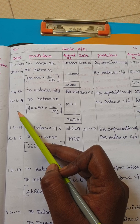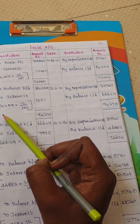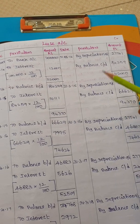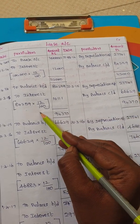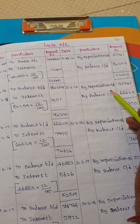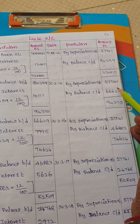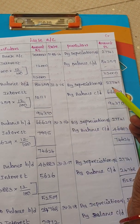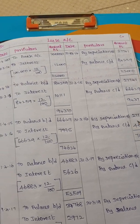On 1-4-2014, to balance brought down: 84,259. To interest account — for that year the interest we have to pay on 84,259 comes to 10,111. On the left side by depreciation account, the depreciation amount is 27,741. By balance carried out: 84,000 plus 10,111 minus 27,741 gives us 66,370, so the balance carried down is 66,370.